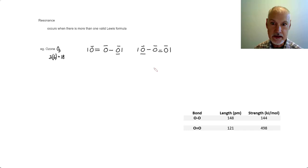Which one's right? Well, they're both right. They're both equally valid. These are considered to be the Lewis formula, or what we call the resonance structures of ozone.